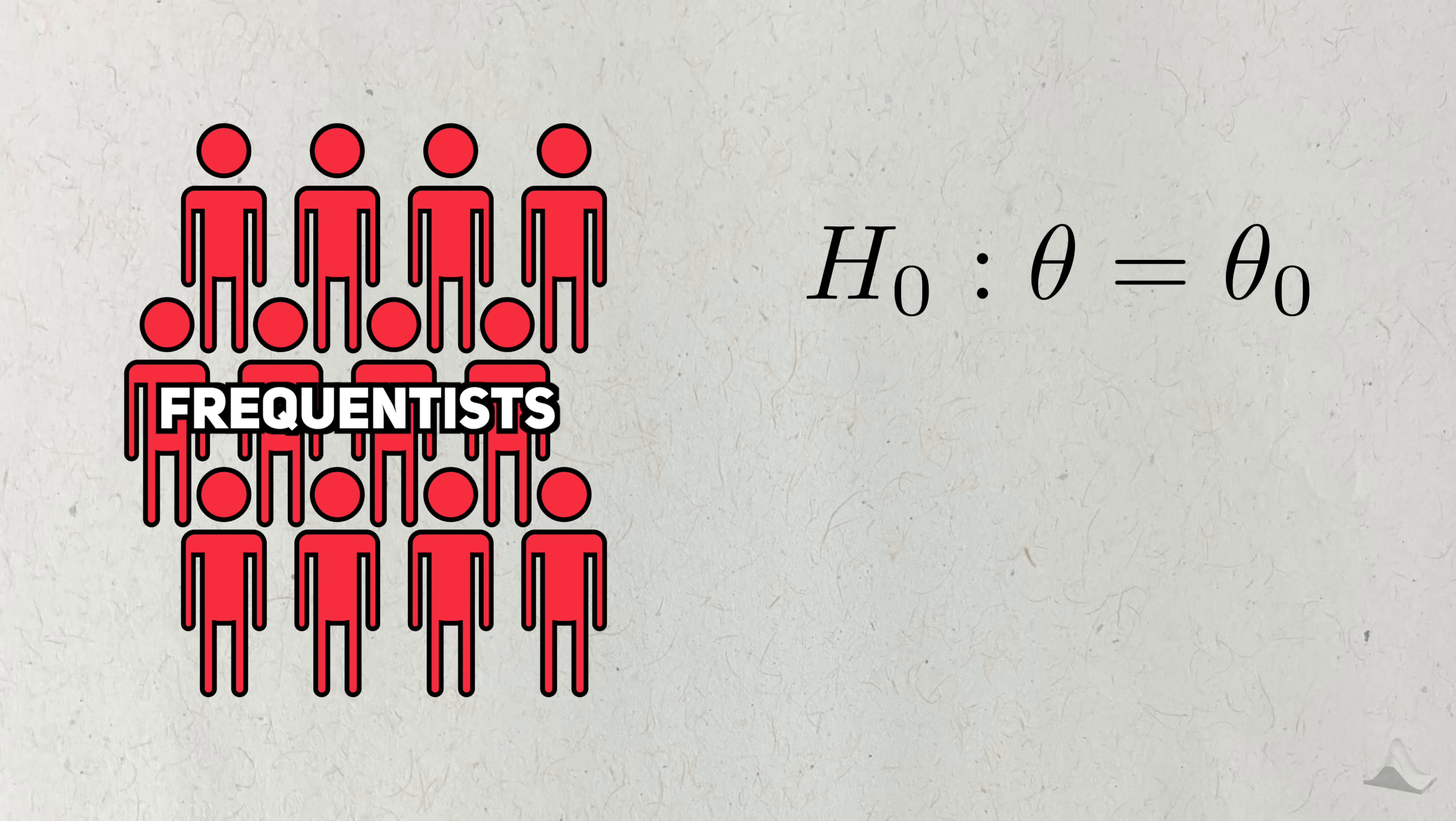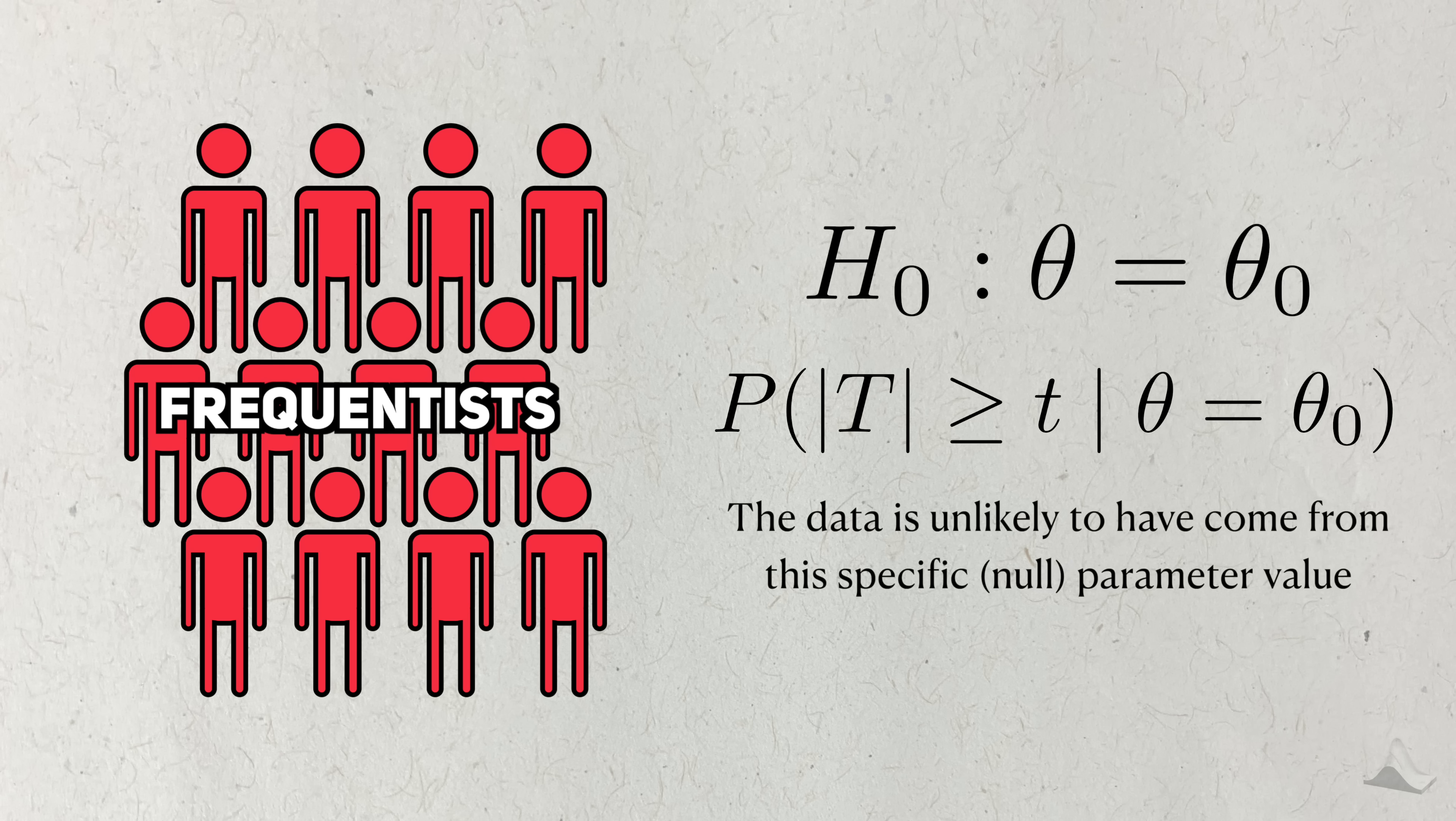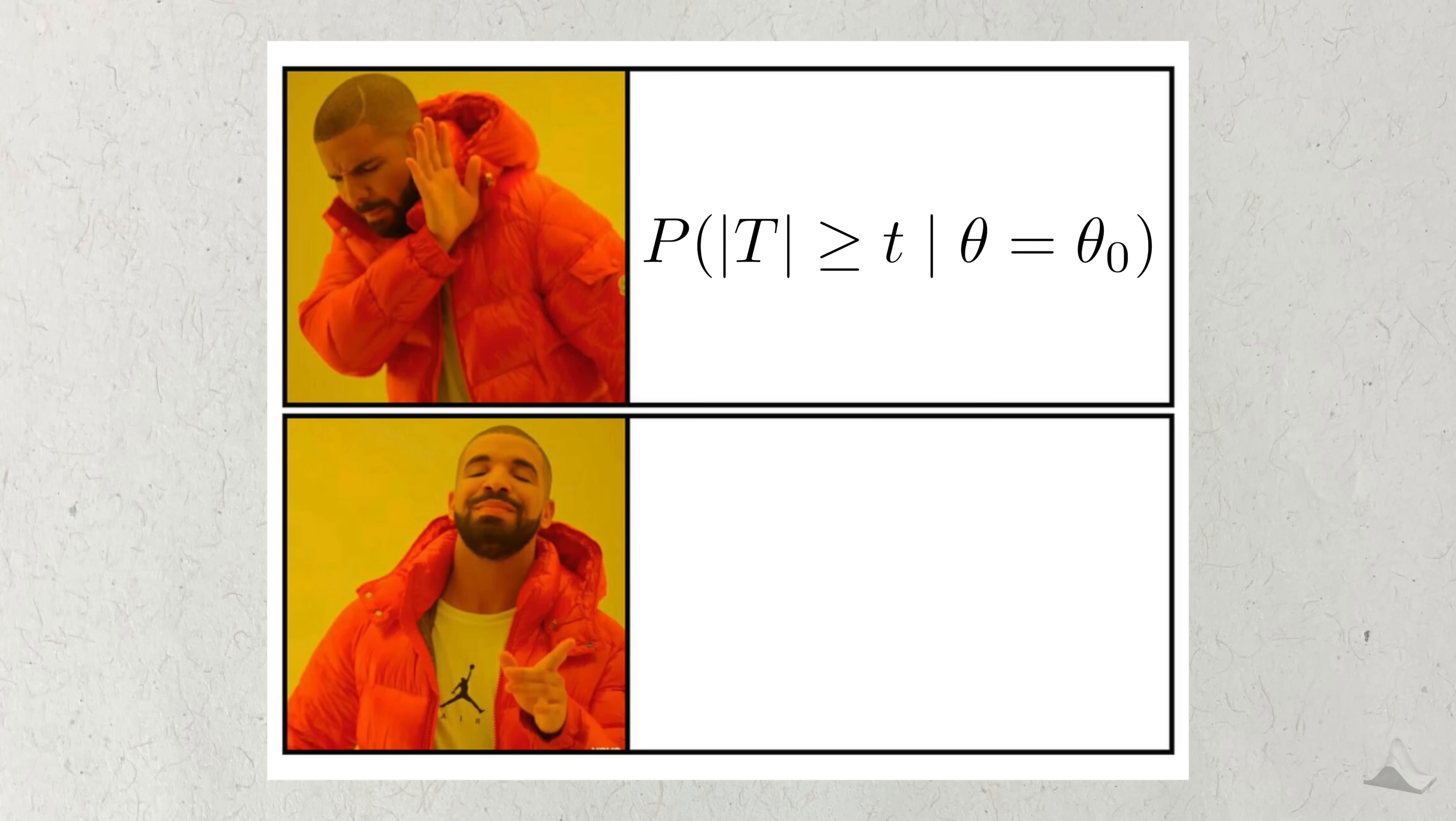With null hypothesis testing, you're just saying that the data is unlikely to have come from a particular hypothesis, or parameter value. That's literally the P value. But for a lot of people, that's not what they want. Instead, they'll want to know a likely value or a range of likely values for the parameter, not what it probably isn't. What they want to know is the probability of the parameter value after collecting some data.